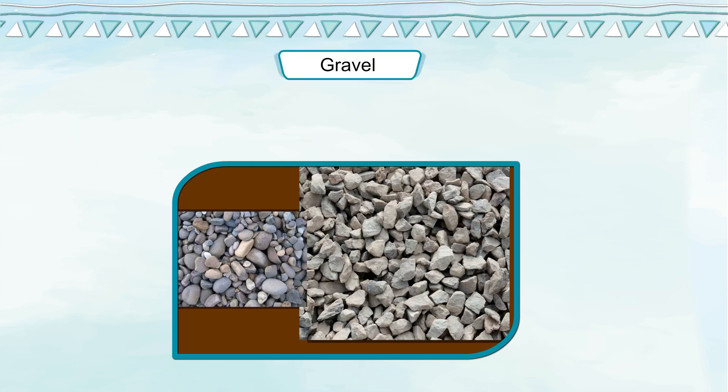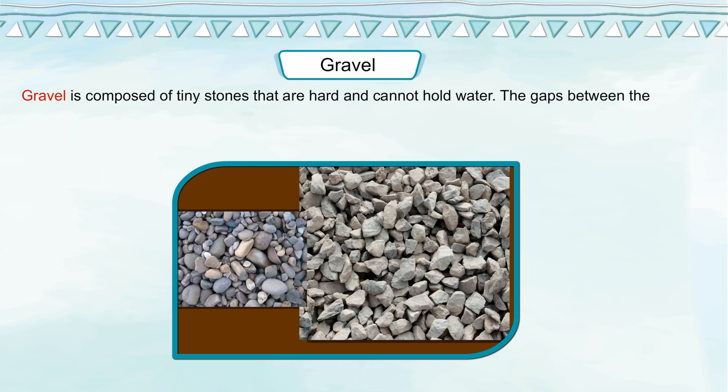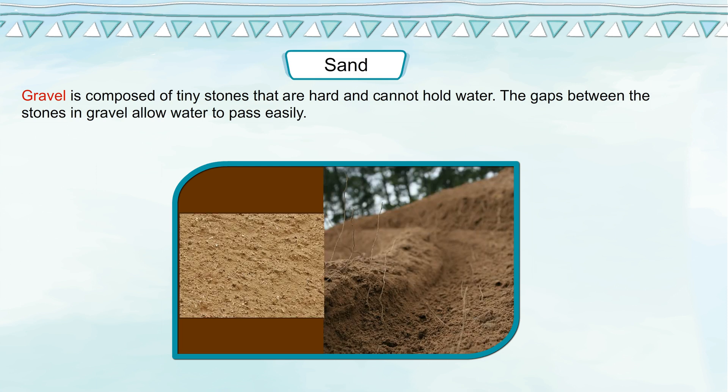Gravel. Gravel is composed of tiny stones that are hard and cannot hold water. The gaps between the stones in gravel allow water to pass easily.